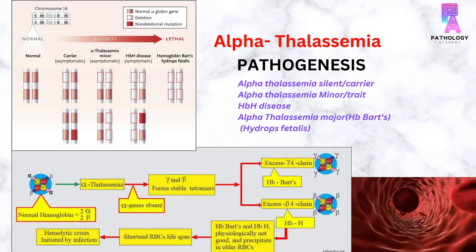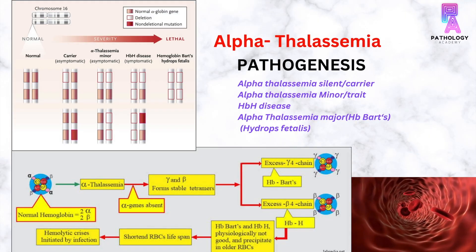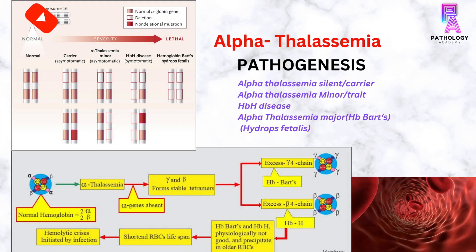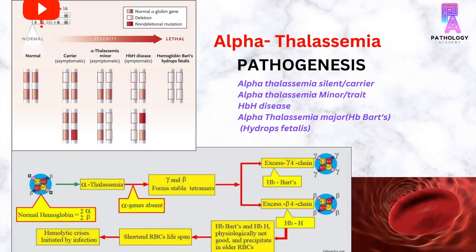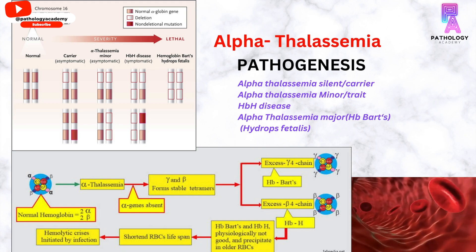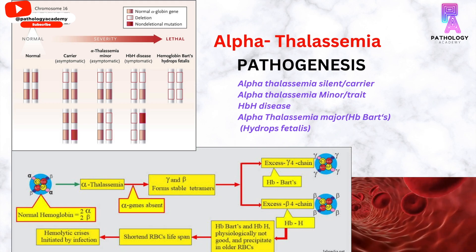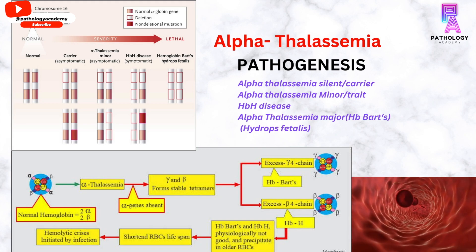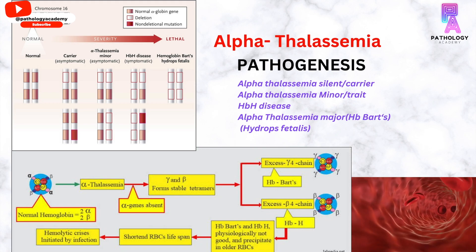Alpha Thalassemia is caused by mutations in two different genes, the HPA1 and the HPA2 genes located on chromosome 16.